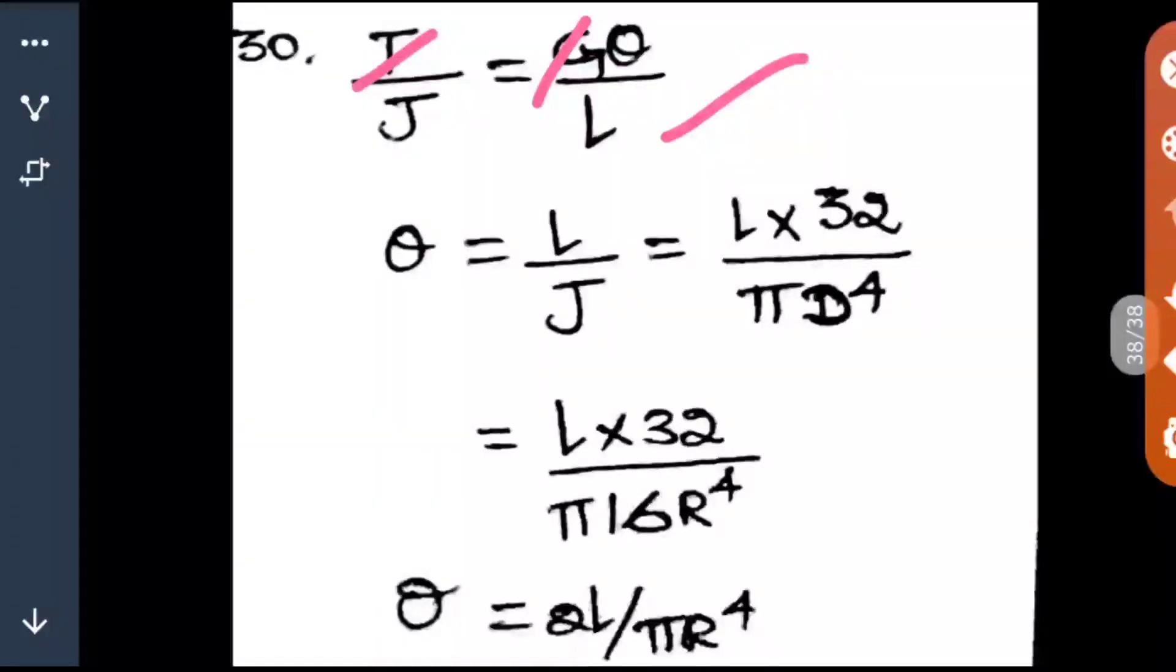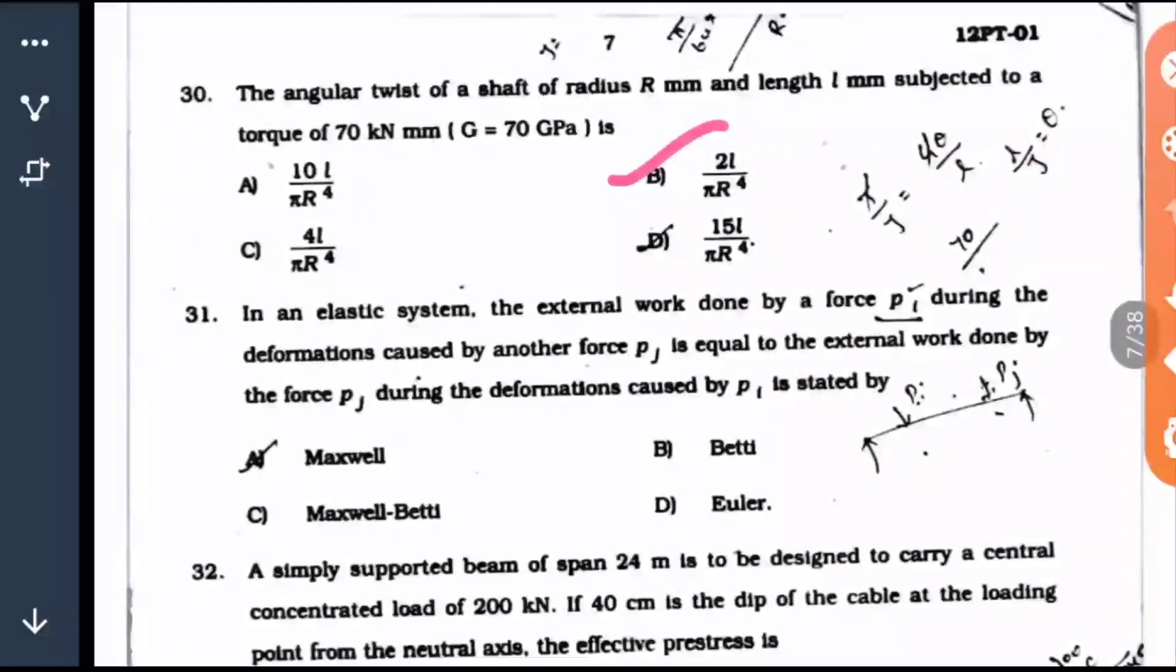In the options they have given in terms of R, so we have to convert D into R. D equals 2R, so 2R to the power 4 gives 16R to the power 4. 16 and 32 cancel to give 2, so the answer is 2L by pi R to the power 4. Here option B is the right answer.